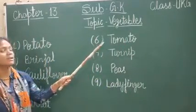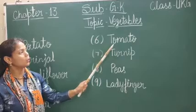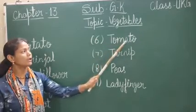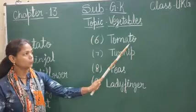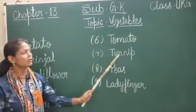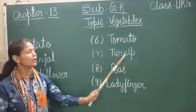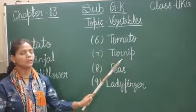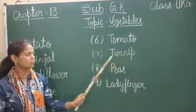Next is tomato. T-O-M-A-T-O, tomato. Next is turnip. T-U-R-N-I-P, turnip. Turnip means saljam.